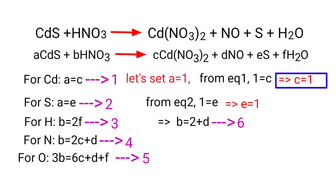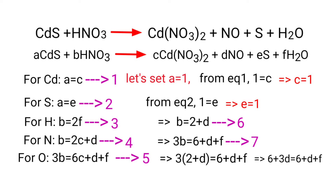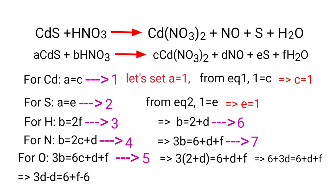Applying the value of C in equation 5 gives 3B = 6 + D + F. Substituting equation 6 into equation 7: 3(2 + D) = 6 + D + F, so 6 + 3D = 6 + D + F, giving 2D = F, therefore F = 2D.